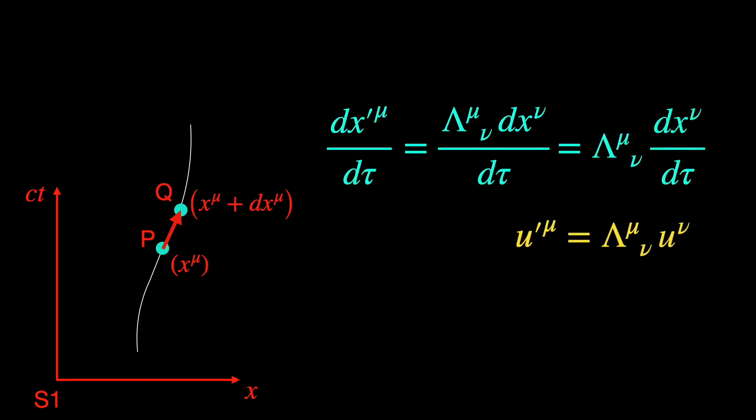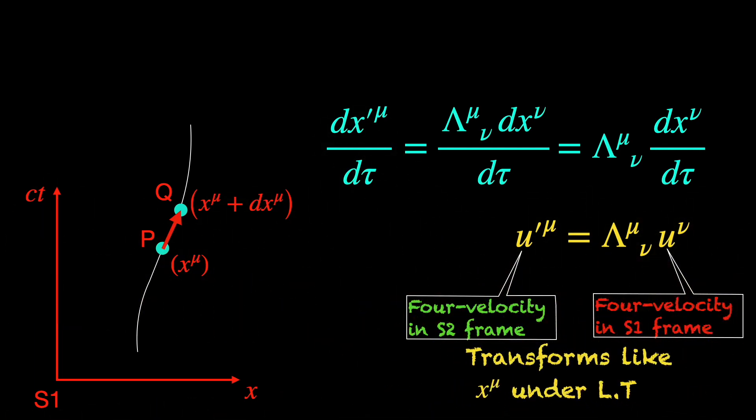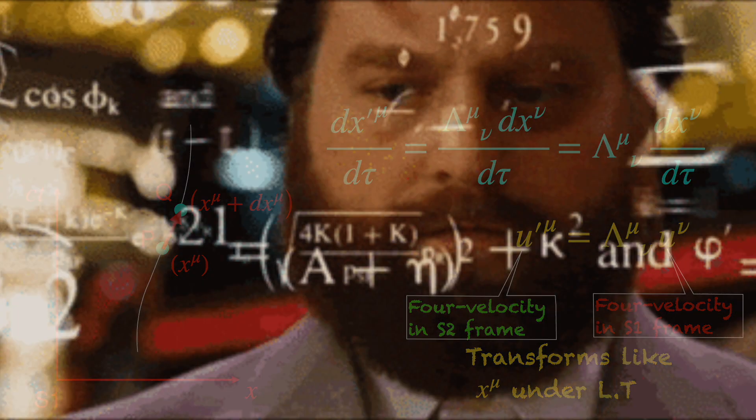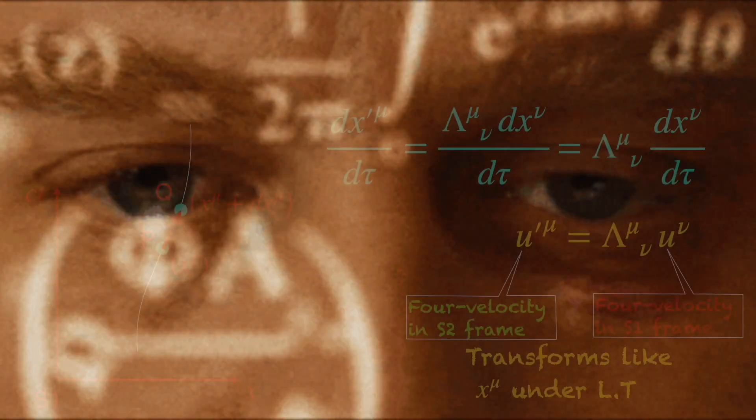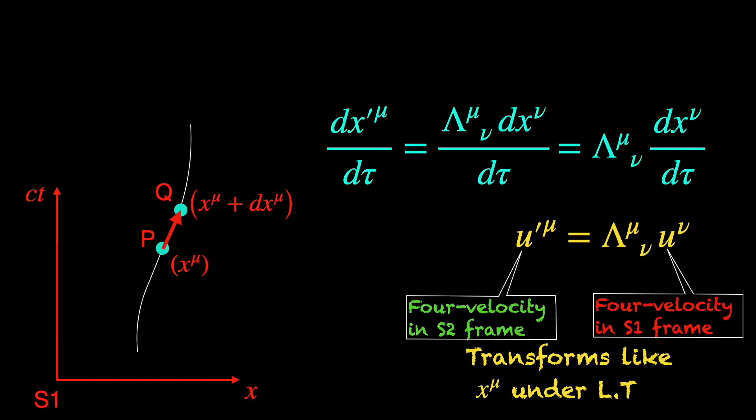We use the symbol u mu for it and call it the four velocity of the particle, since it is very closely related to the three-dimensional velocity vector of the particle, but has four components instead. Certain aspects of this four velocity will blow your mind. There is a dedicated video on it in this channel. Link is in the description as usual.